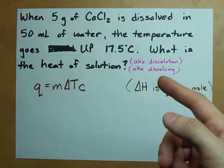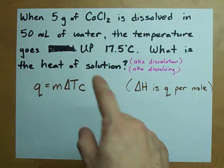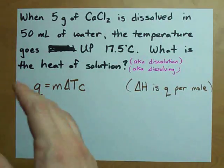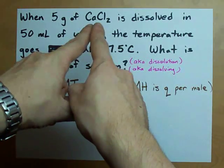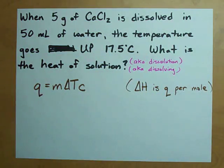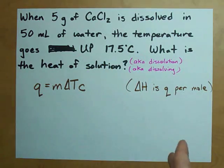In any case, the question is if the temperature goes up 17.5 degrees Celsius, what's the heat of solution? Now, what that asks is how much heat is freed when this becomes aqueous or dissolves inside the water. Heat of solution or ΔH is also called the heat of dissolution, the heat of dissolving, and maybe your teacher used some other word for it. But I want to show you how to calculate it.